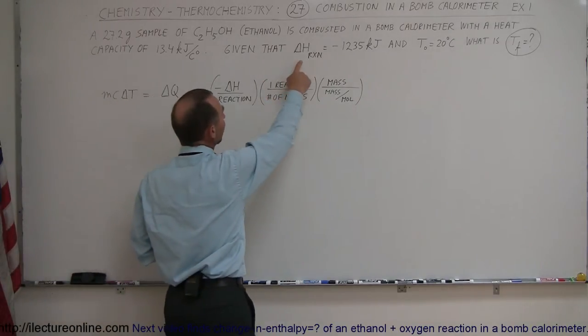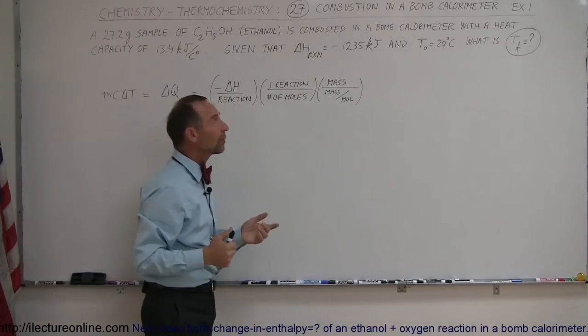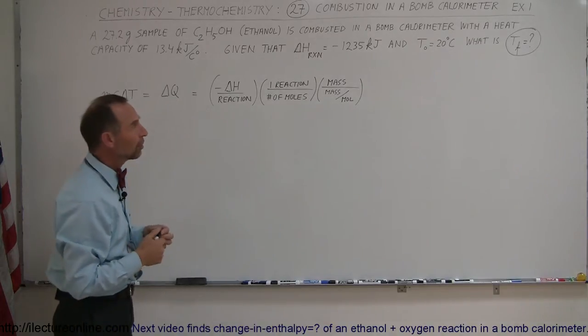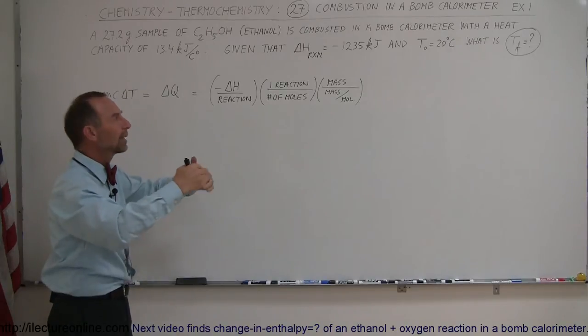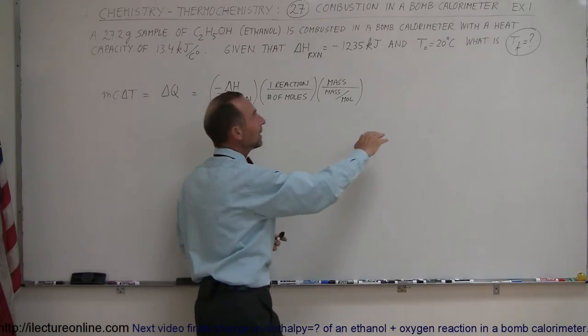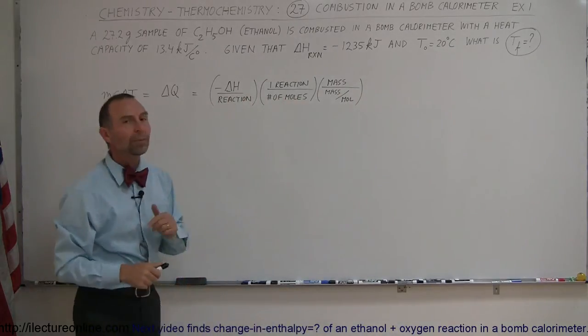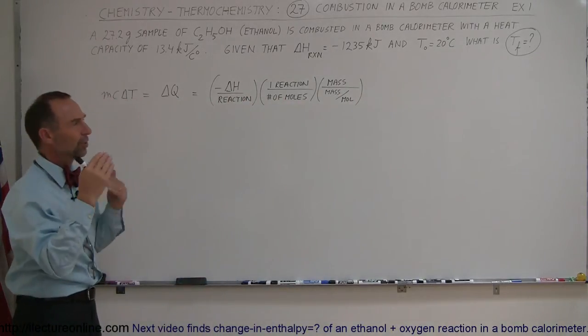Given that the delta H of the reaction is -1235 kilojoules per reaction (negative means it's exothermic, it gives off heat), and that the calorimeter in the solution starts at 20 degrees Celsius, what will be the final temperature? So what will be the temperature increase?